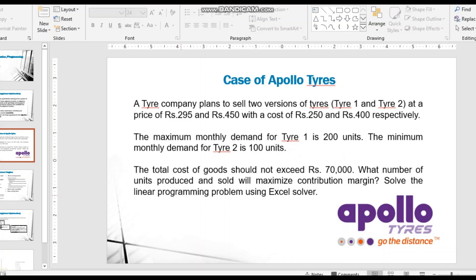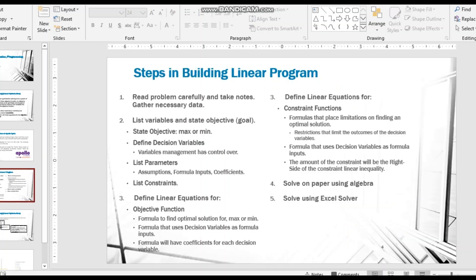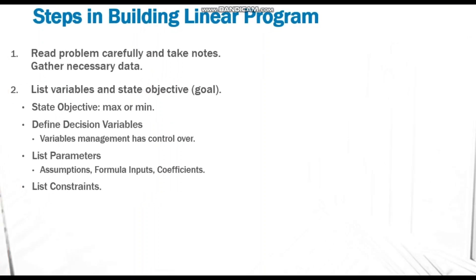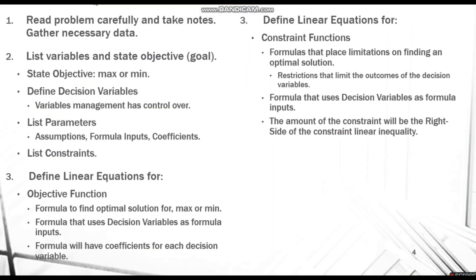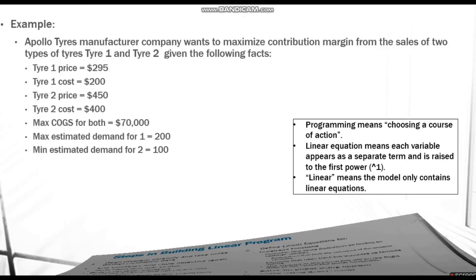Let's discuss the steps involved in linear programming. First, read the problem carefully, take notes, and gather necessary data. Then state whether your objective is to maximize or minimize, and identify your decision variables — in our problem, the decision variables are the quantities to be produced. Next, define the linear equations: the objective function and the constraint functions.